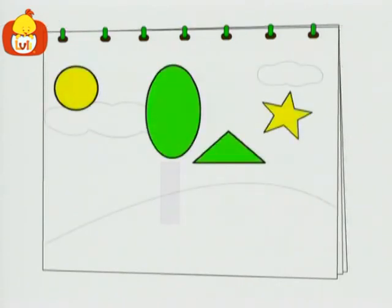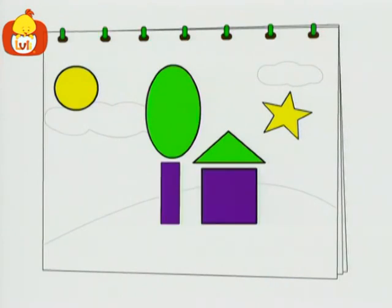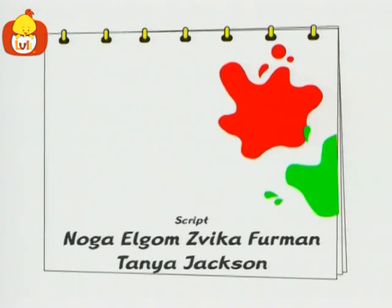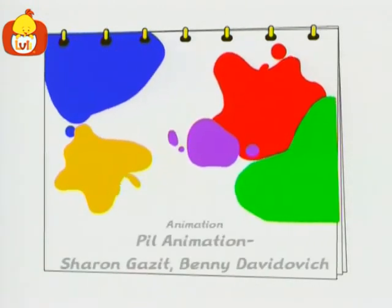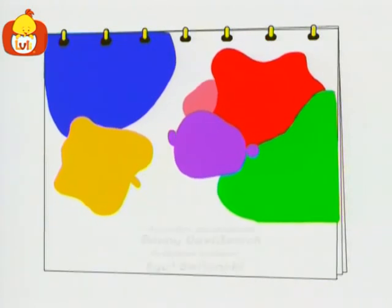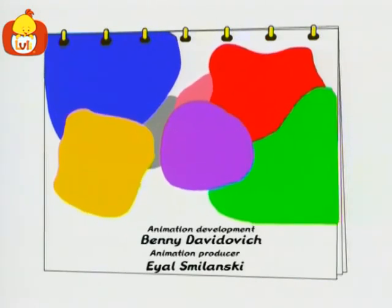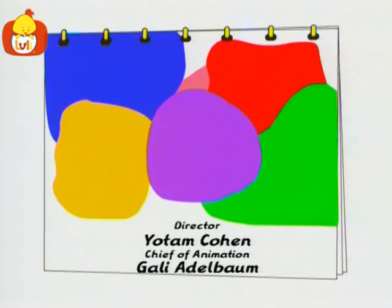About our world we sing, it's full of colorful things. Red and green, blue and yellow, white and purple. Colors from the sky to the ground, colors can be found all around.